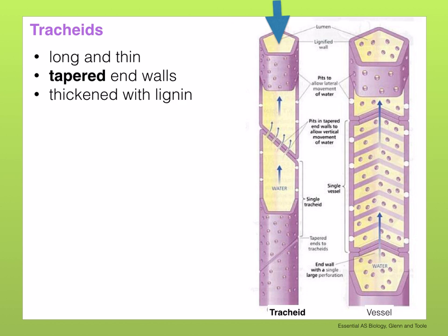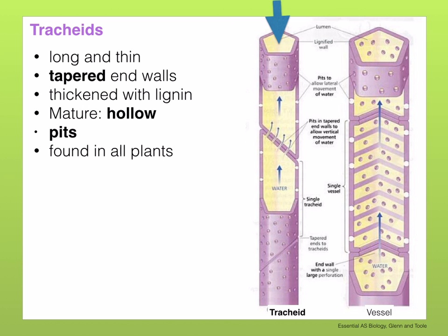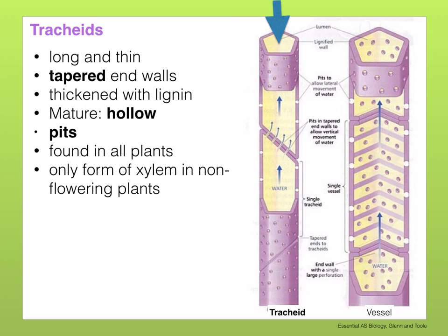Tracheids have tapered end walls. They are thickened with lignin and therefore die when mature, so they are hollow when mature. The ends break down and their sides have pits that allow for the lateral movement of water between adjacent cells. The pits are areas where there is no lignin but there is still a cellulose cell wall. Tracheids are found in all plants and are the only form of xylem in non-flowering plants.